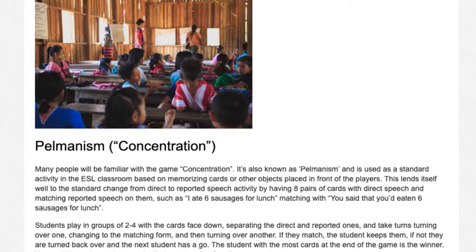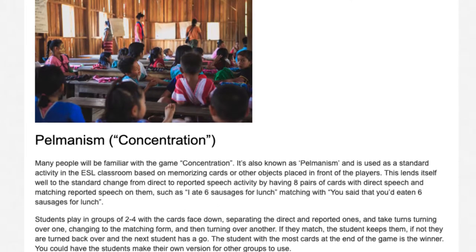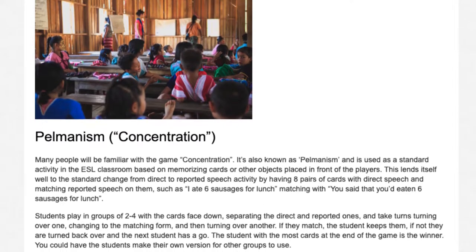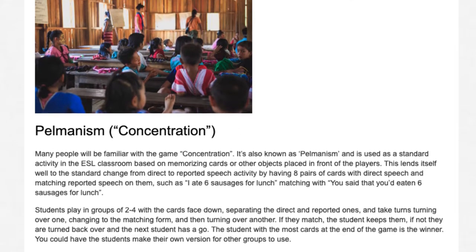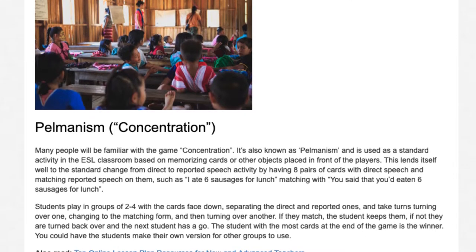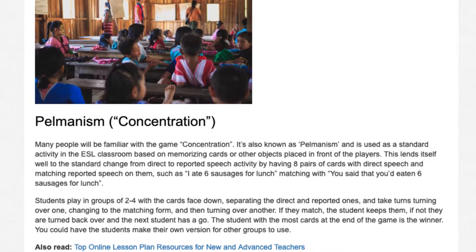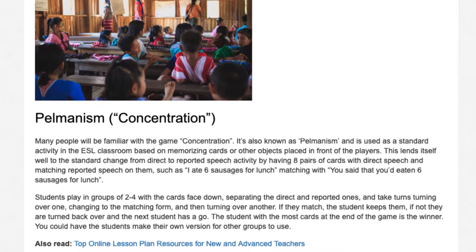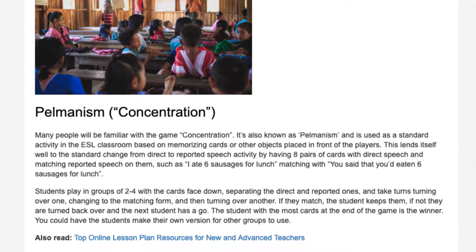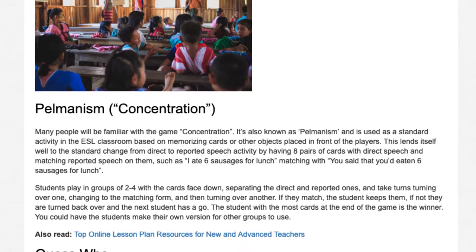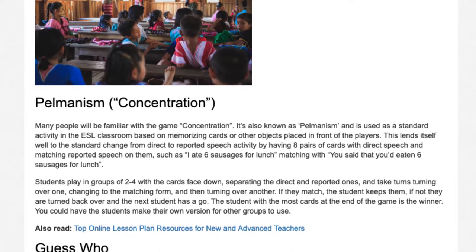This activity is also known as a standard ESL classroom memory game based on memorizing cards or objects placed in front of players. It lends itself well to the standard direct-to-reported speech activity by having eight pairs of cards with direct speech and matching reported speech on them — such as 'I ate six sausages for lunch' matching with 'You said that you'd eaten six sausages for lunch.' Students play in groups of two to four with the cards face down, separating the direct and reported ones, and take turns turning over one card, changing to the matching form, and then turning over another. If they match, the student keeps them; if not, they are turned back over and the next student has a go. The student with the most cards at the end wins. You could have students make their own version for other groups to use.